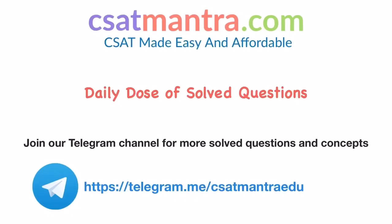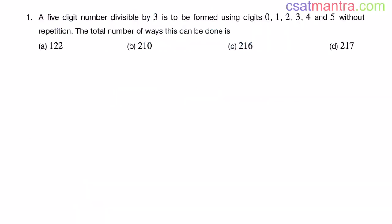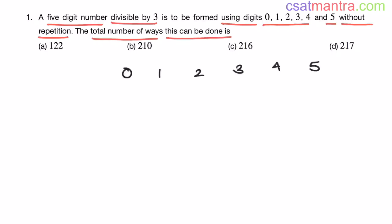A five-digit number divisible by three is to be formed using digits 0, 1, 2, 3, 4, and 5 without repetition. The total number of ways this can be done is — we have six digits: 0, 1, 2, 3, 4, 5, and we need a five-digit number, divisible by 3.